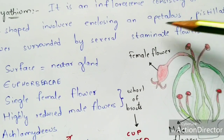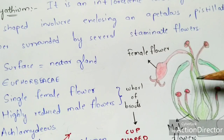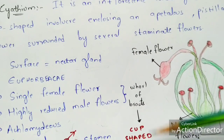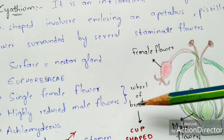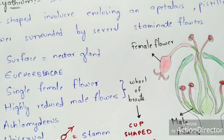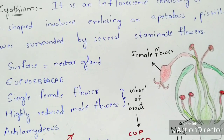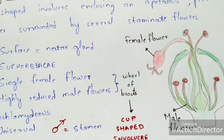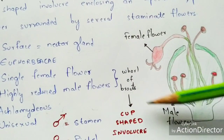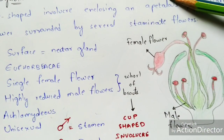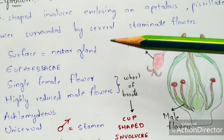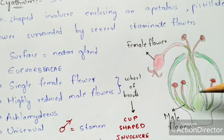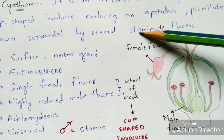The definition of cyatheum inflorescence: it is an inflorescence consisting of a cup-shaped involucre formed by the fusion of bracts, enclosing an apetalous condition — meaning petals are absent — with pistillate flowers (female flowers) surrounded by several staminate flowers (male flowers). So pistillate flower is the female flower, surrounded by staminate flowers which are the male flowers.